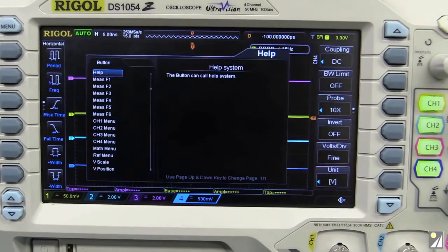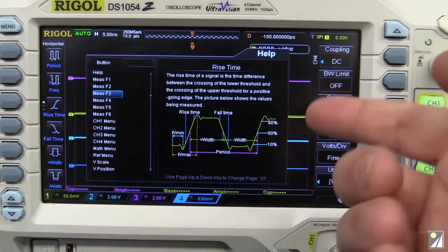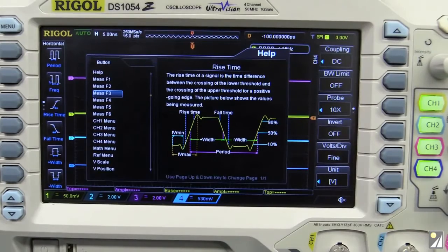Big green help button on the front. You hit that and then you can just choose any of the button which you need help with. Rise time, for example, it explains with waveforms exactly what the measurement function is for. Terrific stuff.